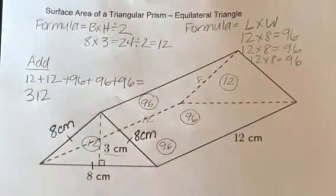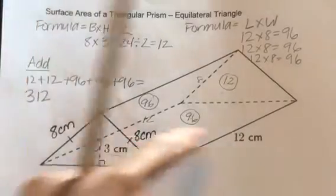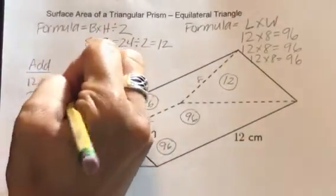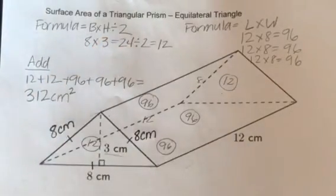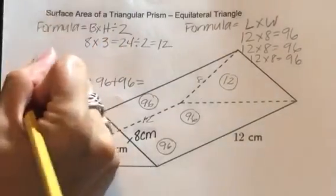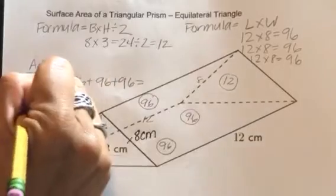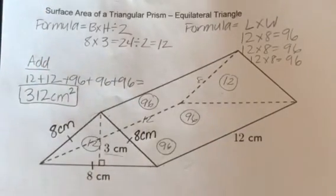And that becomes the surface area of this triangular prism. We need a label. It's being measured in centimeters. Area is squared, so it's squared centimeters. So this is our final answer: 312 square centimeters.